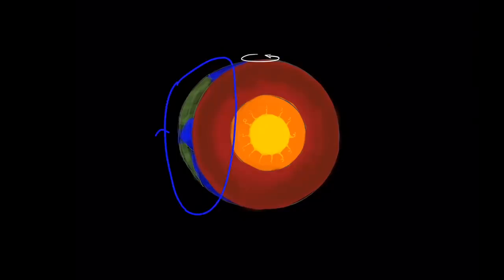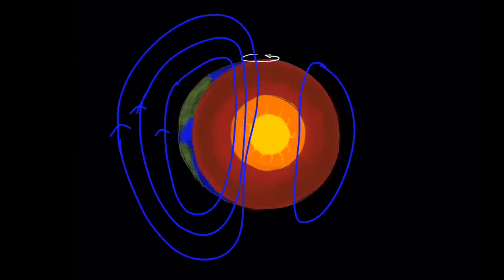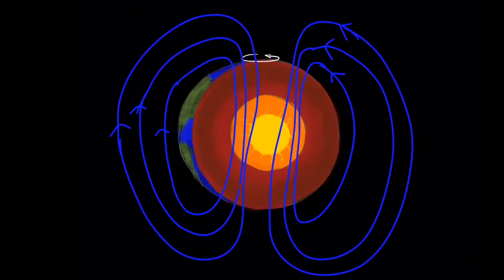If the magnetic fields are generated faster than they dissipate due to the resistance of the metal, well, then you have a self-sustaining electric generator, or a dynamo.